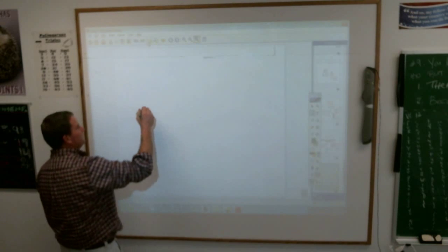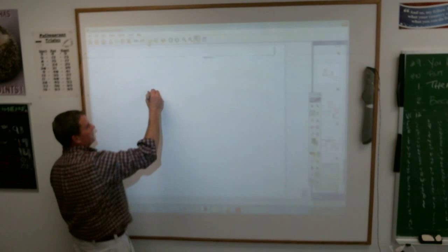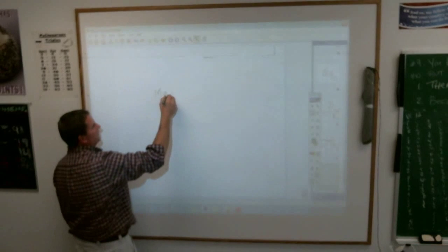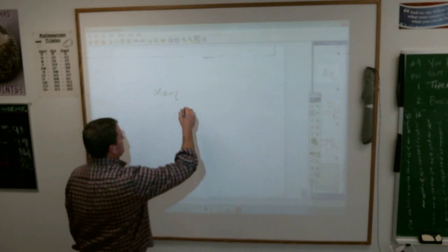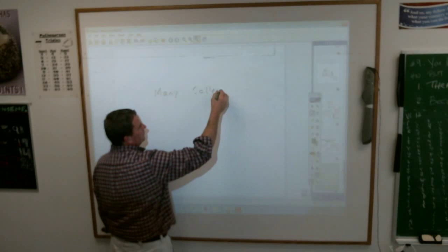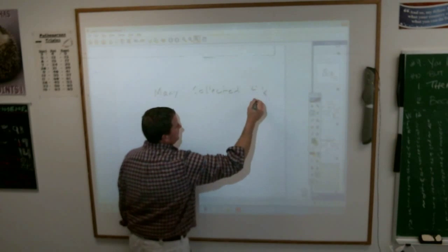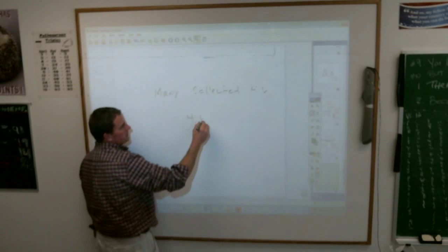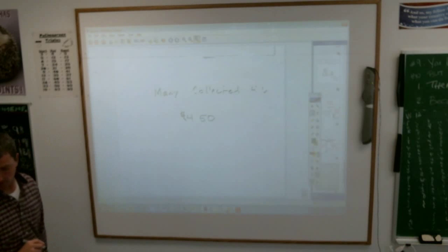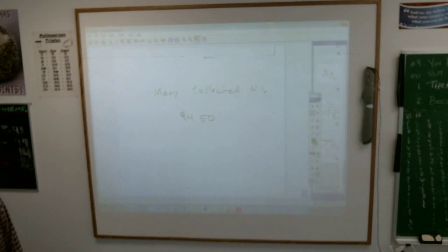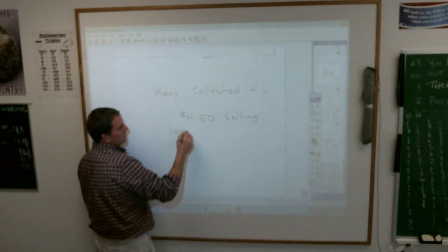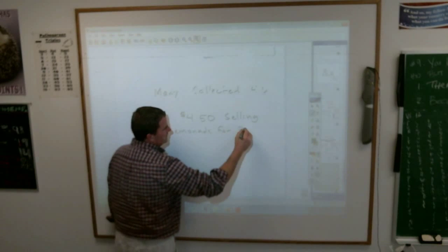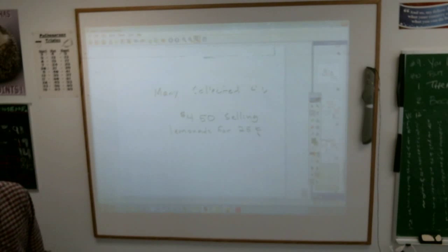Marcy collected $4.50. Let's change her name to something simple. Let's go, Marcy. What did I say she did? She collected $4.50. Oh, boy. Collected $4.50. I don't like it here. I'm going to go down here. $4.50. She collected $4.50. Selling lemonade at $0.25. Selling lemonade, lemonada, for $0.25.